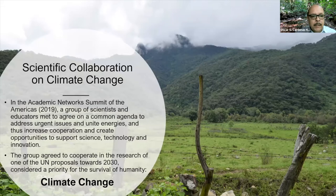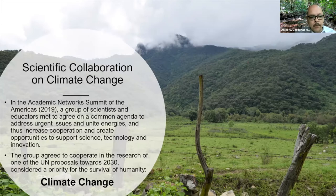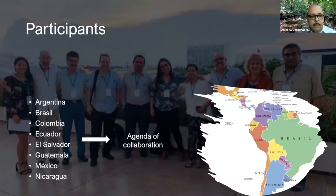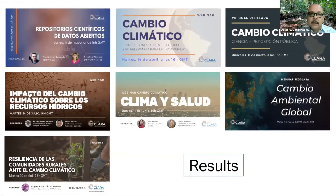At the academic network summit of the Americas in 2019, a group of scientists and educators met to agree on a common agenda to address urgent issues and increase cooperation to support science, technology, and innovation. The group agreed to cooperate in the research of one of the UN proposals towards 2030, which is considered a priority for the survival of humanity: climate change. We developed an agenda of collaboration that included creating a series of webinars related to climate change and its impacts on different issues, for example global health, open data repositories, how climate change impacts hydrology, and how rural communities are adapting to climate change.